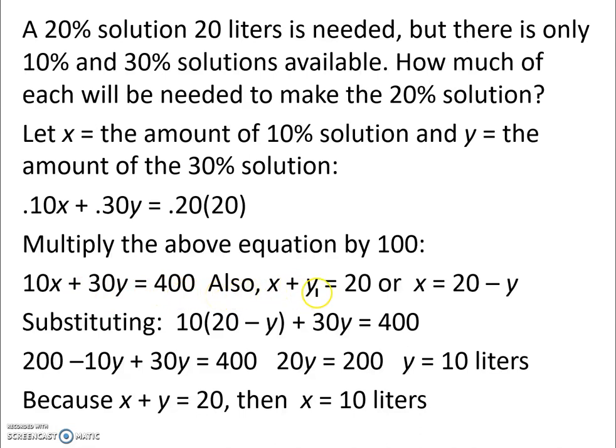We multiply the above equation by 100, and we find that we have 10x plus 30y equals 400. We also know x plus y has to be 20 liters, or if we take the y over to the other side, x equals 20 minus y. Substituting that in for x in our first equation over here, we have 10 times the quantity 20 minus y, plus 30y equals 400.